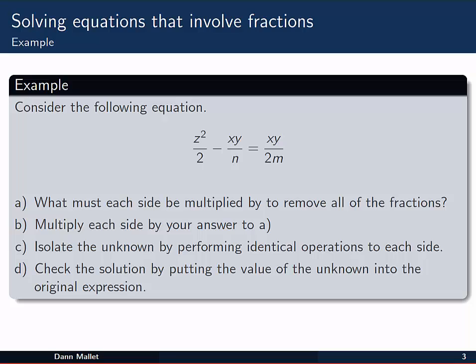Let's have a look at this example. Consider the following equation: z squared on 2 minus xy on n is equal to xy over 2m. The example here gives us a few steps to pass through. Now if you'd like, stop the video now and have a go yourself before coming back and following through with me.